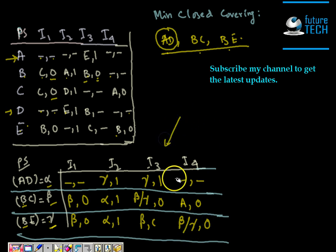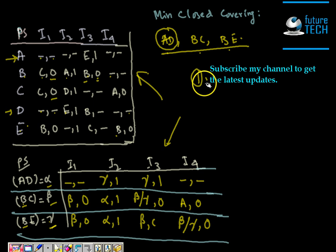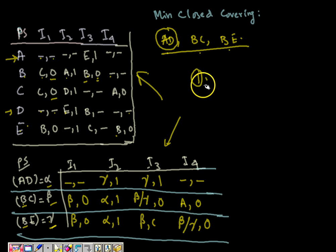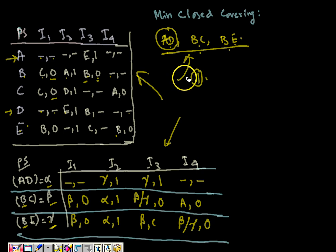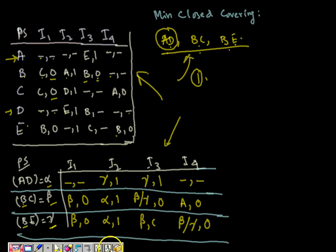So this is the minimized or reduced machine for the given example. To summarize: first, develop the merger graph — you can also use a merger table. Then find the compatible pairs, develop the compatibility graph, and from the compatibility graph find the minimal closed covering. There may be more than one minimal closed covering. Use one of them to build the reduced machine, where each compatible pair in the minimal closed covering is a state. I hope this is understandable — now we can develop a reduced machine from an incompletely specified machine. Thank you for watching.